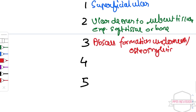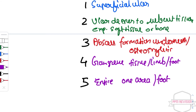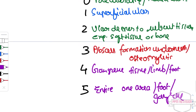Grade 4 is gangrene of part of the tissue or limb. Grade 5 is gangrene of the entire one area or foot. So all five grades are covered.